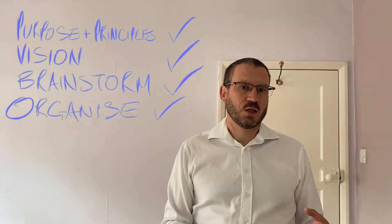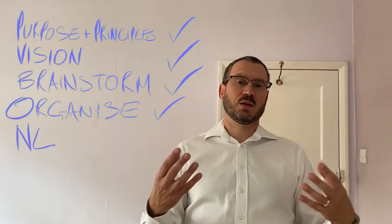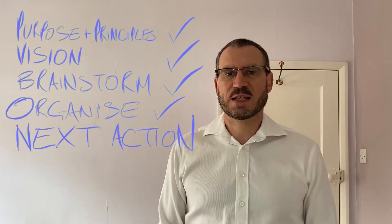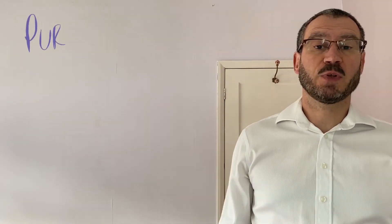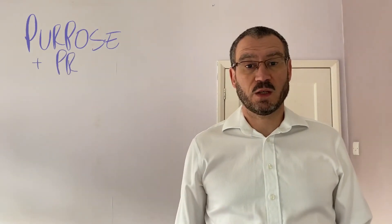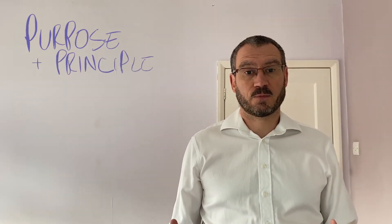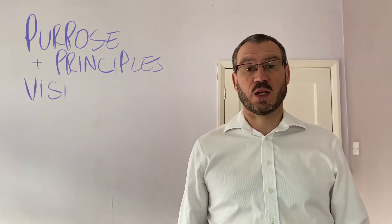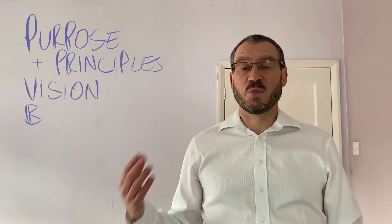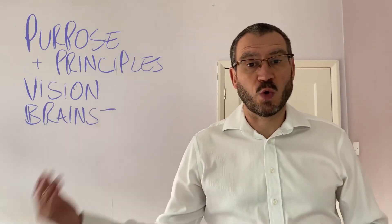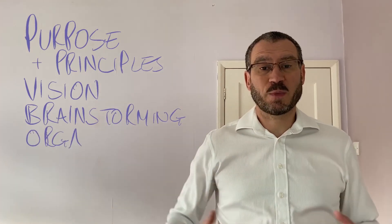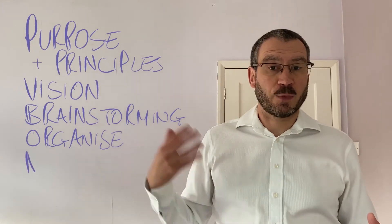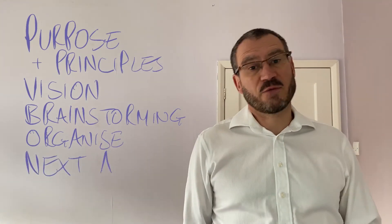Once you've got organised, then we can ask that great, freeing Getting Things Done question: what's my next action? What is the next thing I'm going to do to move towards that wild success? So to recap: we start with our purpose and principles — why are we doing what we're doing and what are the rules we need to play by? Then we imagine what wild success would look like. From there we can start brainstorming all the ideas — the whats and whys and wherefores, what could go wrong and what would be brilliant. When we've surfaced all of our thoughts about our purpose and vision, then we can start organising them and finally get to our next action.